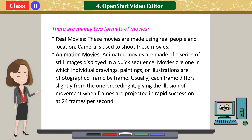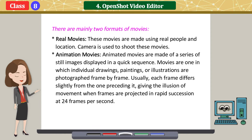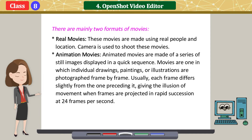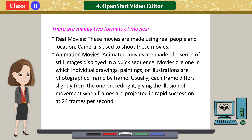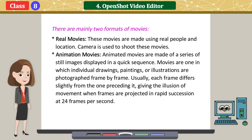Animation movies — animated movies are made of a series of still images displayed in a quick sequence. These are movies in which individual drawings, paintings or illustrations are photographed frame by frame. Usually each frame differs slightly from the one preceding it, giving the illusion of movement when frames are projected in rapid succession at 24 frames per second.